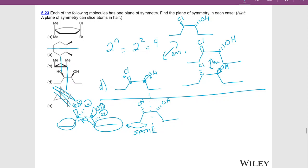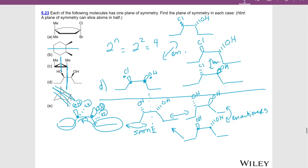It has a plane of symmetry right down the center. What if I draw one of those OHs going back and the other one coming out? And then I can draw its enantiomer by drawing the left OH coming out and the right one going back. These are mirror images of each other because I've swapped the wedges and dashes, but they are not superimposable on each other. The relationship between these two is enantiomers, and they are diastereomers to the meso form.